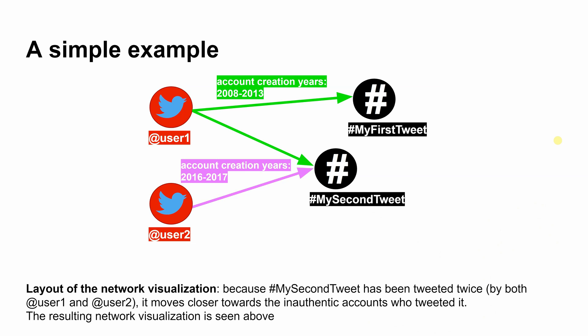Layout of the network visualization: because "my second tweet" has been tweeted twice, by both user1 and user2, it moves closer towards the inauthentic accounts who tweeted it. The resulting network visualization is seen above.